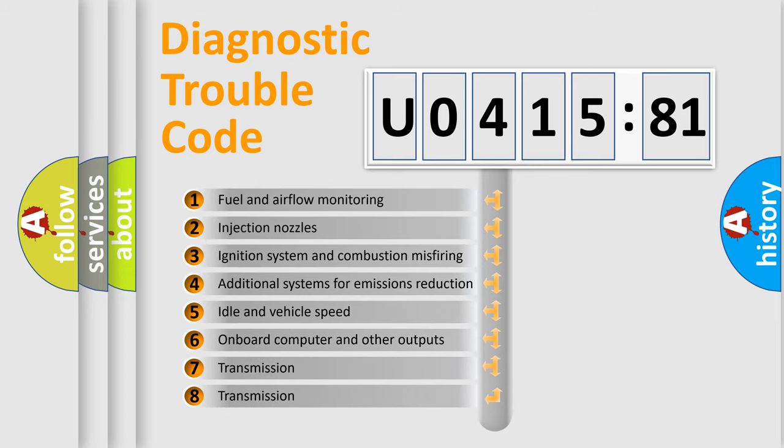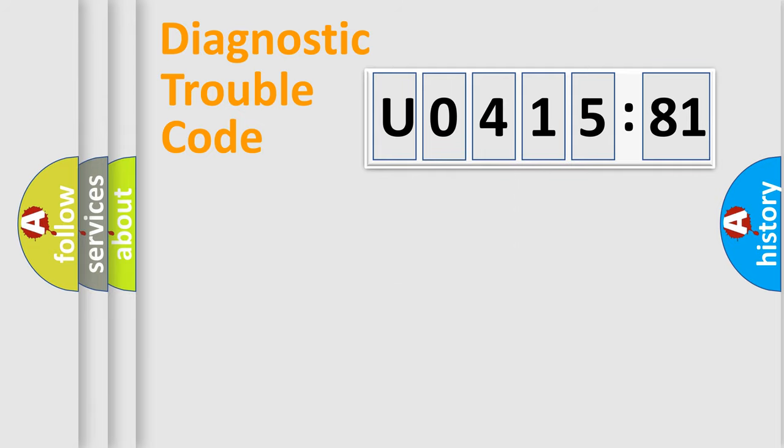The third character specifies a subset of errors. The distribution shown is valid only for the standardized DTC code. Only the last two characters define the specific fault of the group.